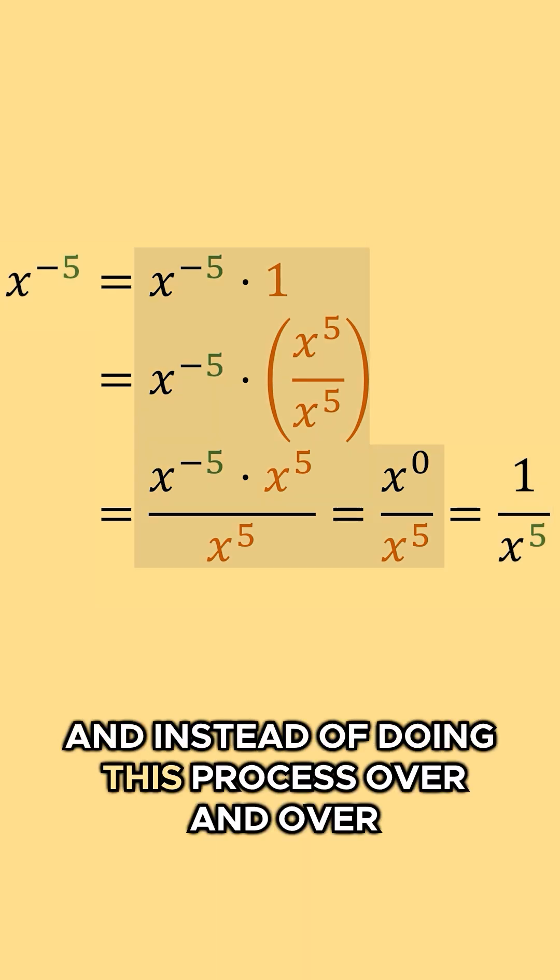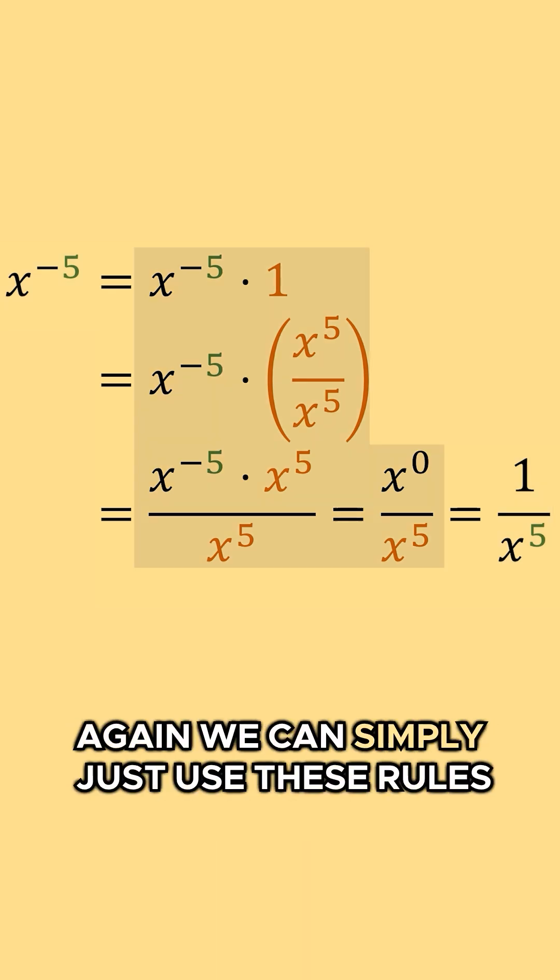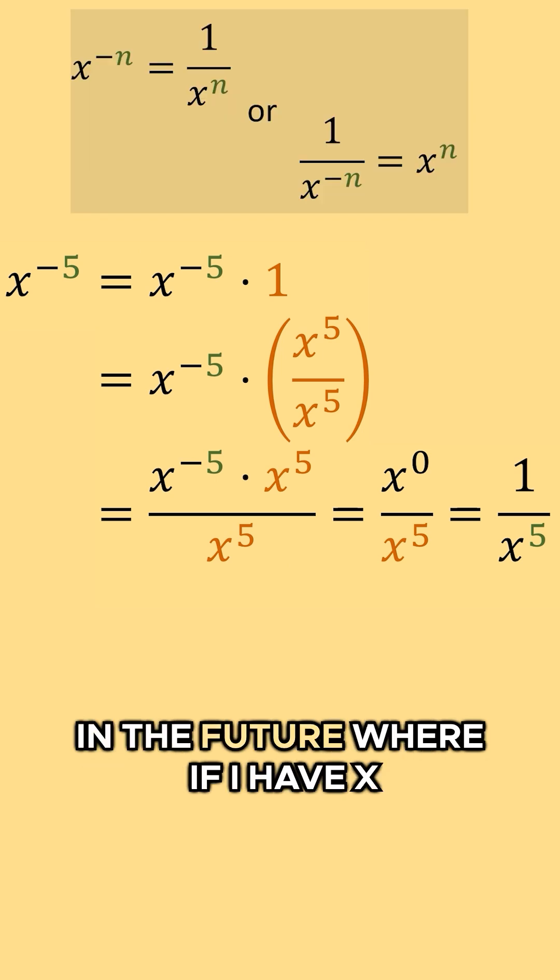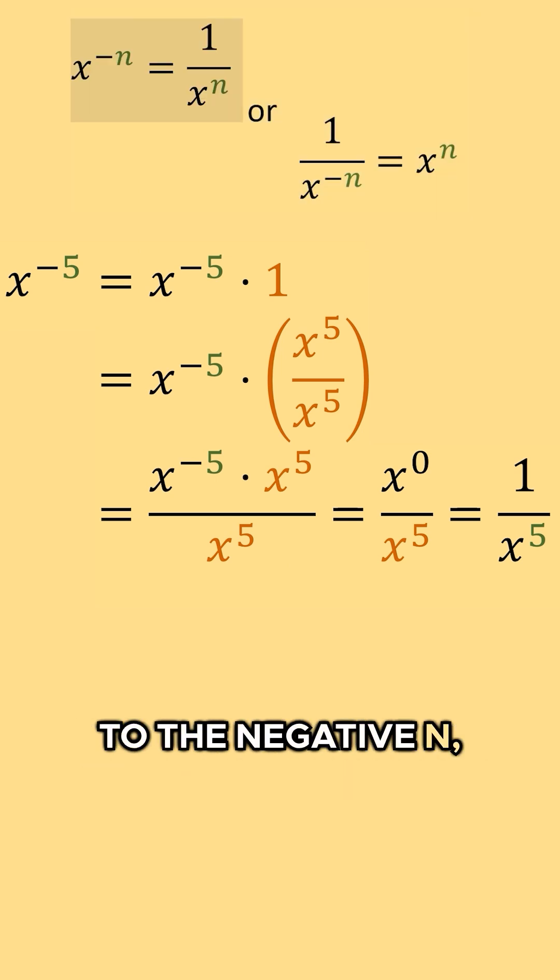And instead of doing this process over and over again, we can simply just use these rules in the future, where if I have x to the negative n, I can replace that with one over x to the n, or if I have one over x to the negative n, I can replace that with x to the n power.